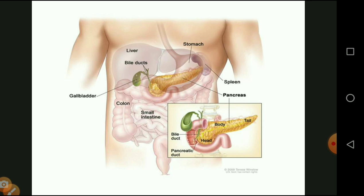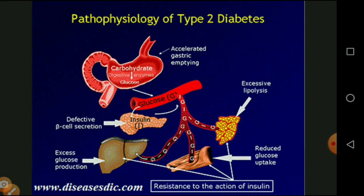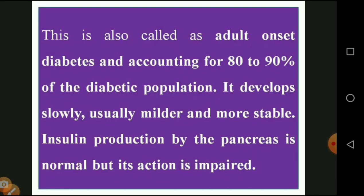Type 2 diabetes, non-insulin dependent diabetes mellitus, is caused by defective beta cell secretion, excessive lipids, reduced glucose uptake, and excessive glucose production by the liver. It is also called adult-onset diabetes, and is commonly seen — it accounts for 80 to 90 percent of diabetic cases in the population.